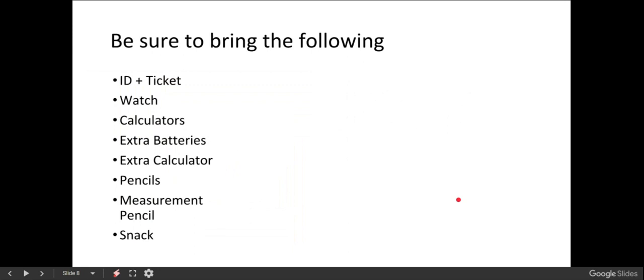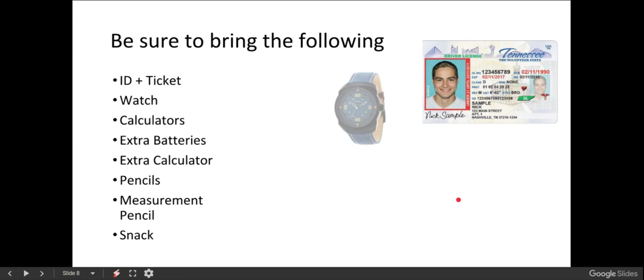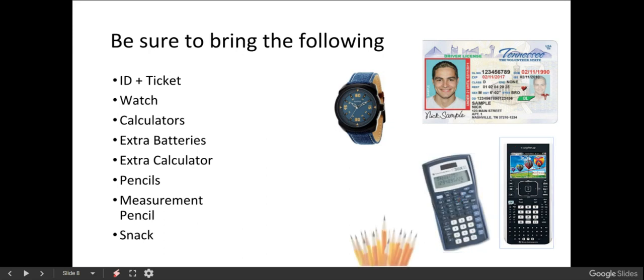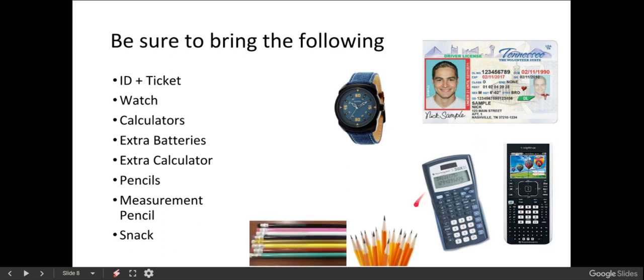Be sure you have all the following items to bring with you. You have your ID. Unless you're doing a state testing at your school, you'll need your admission ticket as well that you print from the ACT website. Bring a watch. A watch is essential for keeping track of time. You don't want to keep looking back and forth to the clock on the wall. Calculator. Your main calculator and a backup calculator. Something that's cheap and solar powered. Extra batteries if your calculator uses batteries. Pencils. If you have your measurement pencil, bring that.